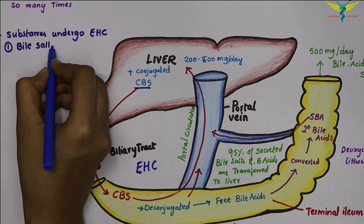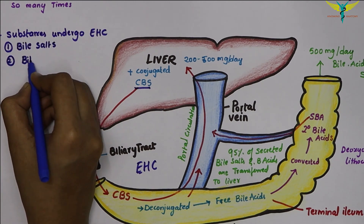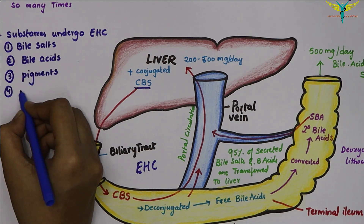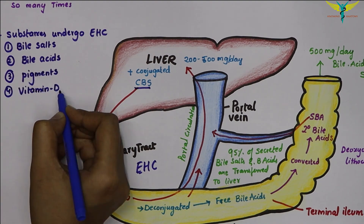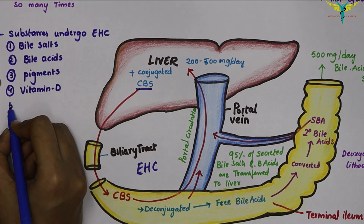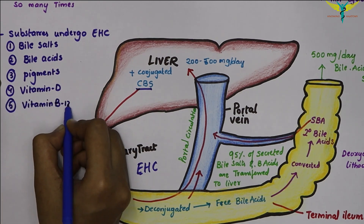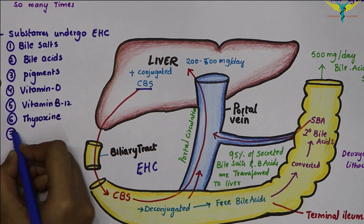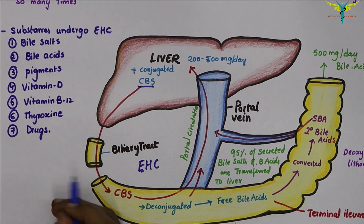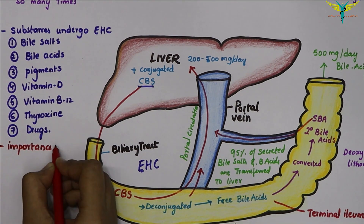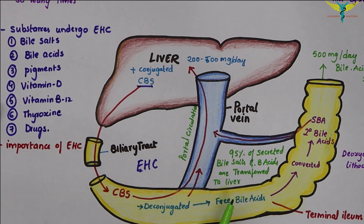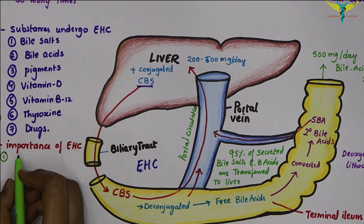The substances that undergo the enterohepatic circulation include bile salts, bile acids, pigments, vitamin D, vitamin B12, thyroxine, and some drugs. The primary function of the enterohepatic circulation of the bile acids and bile salts is to maintain the total bile acid pool of the body.